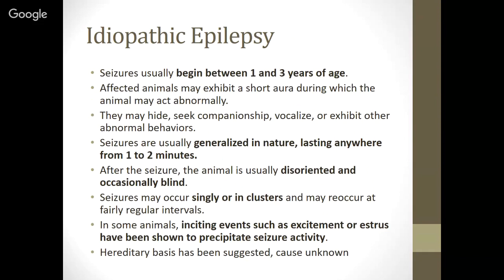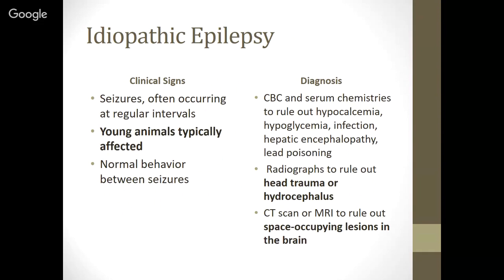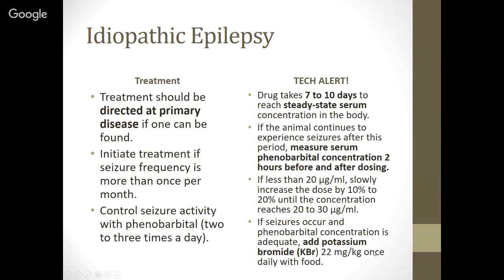Once we have diagnosed a seizure episode, regardless of cause, our goal is to stop the seizures or reduce them as much as possible. Clinical signs of idiopathic epilepsy include seizures occurring at regular intervals, typically more than once every three months, and young animals are affected but otherwise have normal behavior between seizures. We need to do a CBC, serum chemistries, and rule out hypocalcemia, hypoglycemia, infection, hepatic encephalopathy, lead poisoning, head trauma, hydrocephalus, and space-occupying lesions via CT or MRI. Treatment should be directed at the primary disease if we can find one — in that case, it's no longer idiopathic.